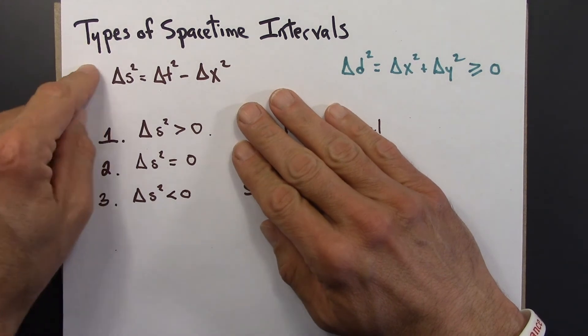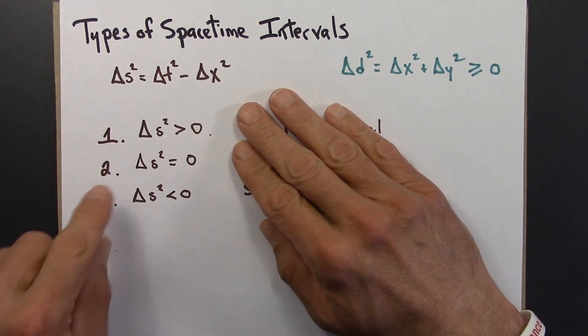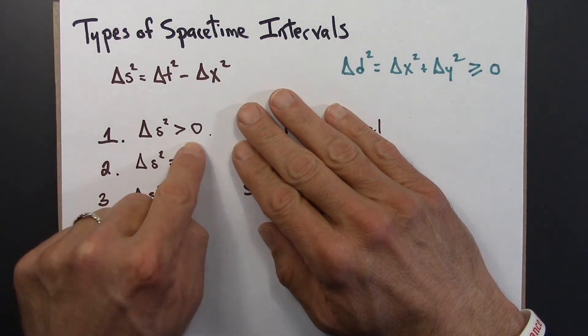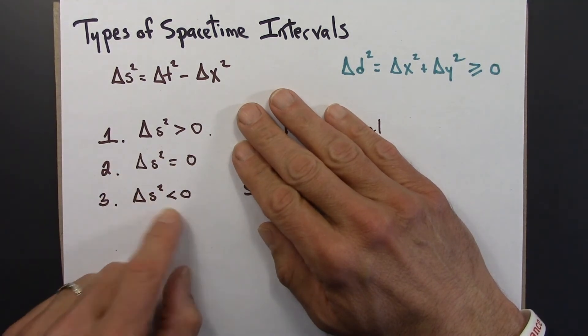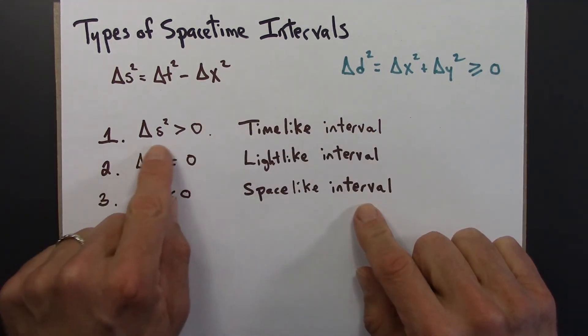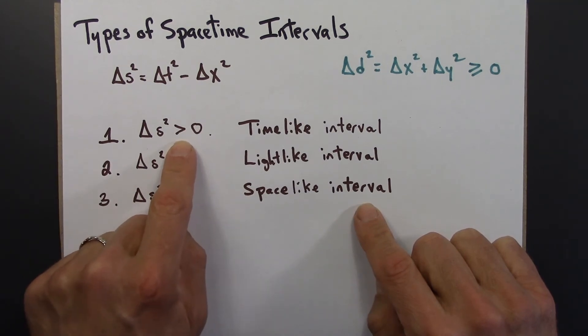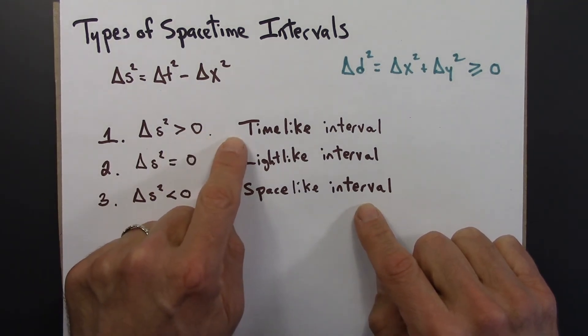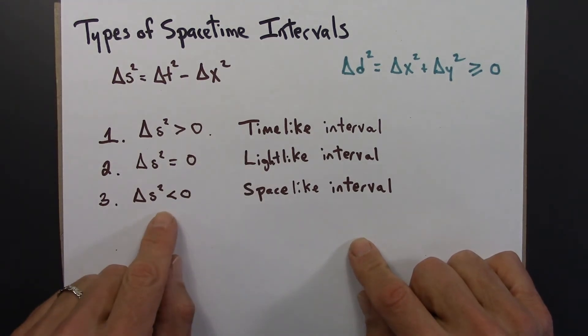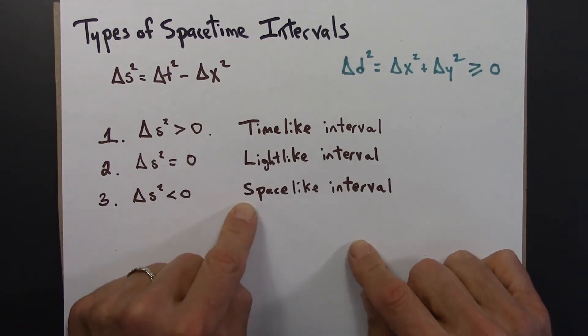There are three types of space-time intervals, and they correspond to whether the space-time interval, or the squared space-time interval, is positive, zero, or negative. These three cases go by these three names. If delta s squared is positive, we say that the space-time interval is time-like. If it's zero, we say it's light-like. And if it's negative, we say that it's space-like.